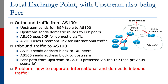Outbound traffic from AS100 is quite simple to set up. The upstream will send the full BGP table to AS100's Router C. The upstream provider will send domestic routes to the exchange point peers. AS100 will use the exchange point for domestic traffic and will use the upstream link for international traffic. So outbound traffic is quite simple to achieve.